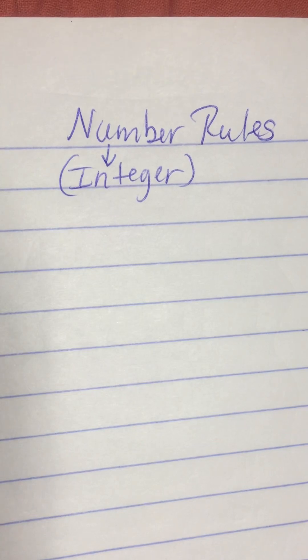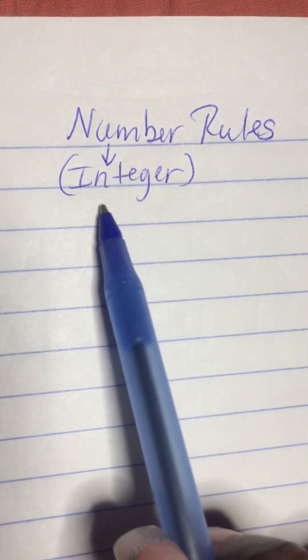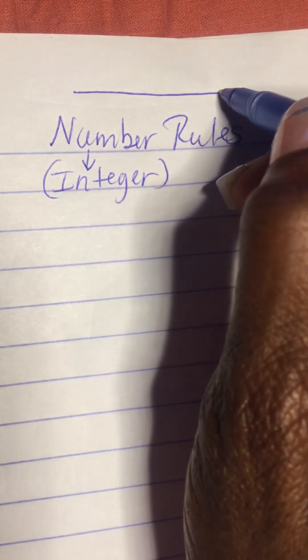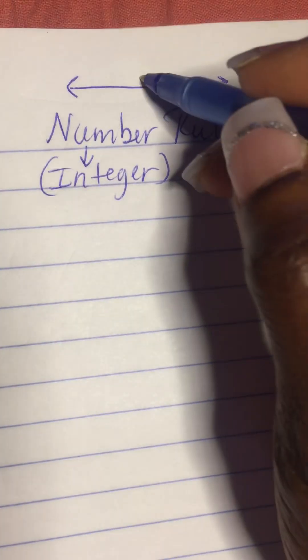Hi class, this is Ms. Champagne and today I'm going to teach you about number rules. Another word for number is integer. Any number that you see on a number line is called an integer.